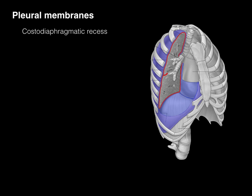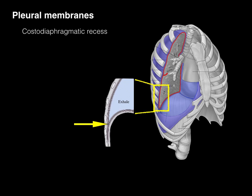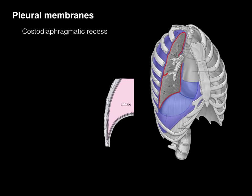The costodiaphragmatic recess, shown in yellow, is seen at the bottom of the right lung. Blown up, the costodiaphragmatic recess is an area where there is a double membrane of parietal pleura doubled upon itself, leaving a space. This is significant because when you inhale, your lungs expand and the tip of the lung fills that costodiaphragmatic recess, then empties on exhale. It is named costodiaphragmatic because 'costo' refers to ribs — it is the recess between the ribs and the diaphragm.